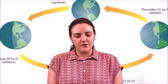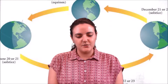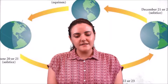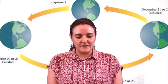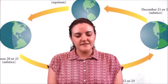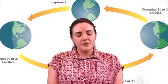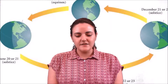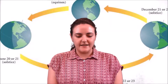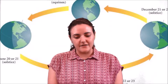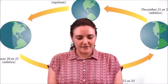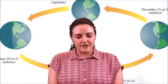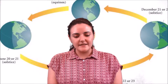Alternative terms with no ambiguity as to which hemisphere is the context are June solstice and December solstice, referring to the months in which they take place every year. The word solstice is derived from the Latin sol meaning sun and sistere meaning to stand still, because at the solstices the sun's declination appears to stand still.